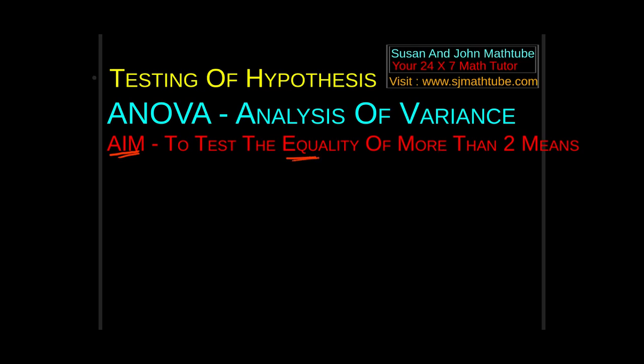When we learn testing of hypothesis, we first learn how to deal with single mean, then two means, and finally more than two means. That will be our ANOVA test. Similarly, we learn single proportion, then two proportions, and more than two proportions. The more than two proportion test is called chi-square test.